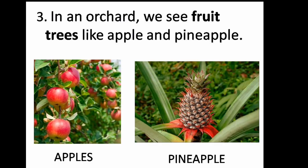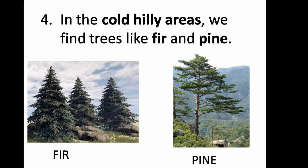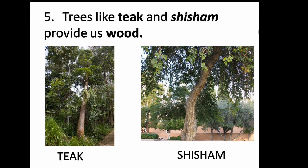In an orchard we see fruit trees like apple and pineapple. In the cold hilly areas we find trees like fir and pine. Trees like teak and shisham provide us wood.